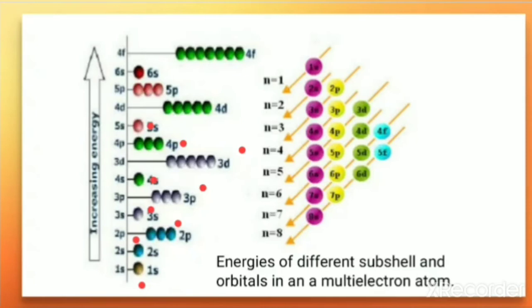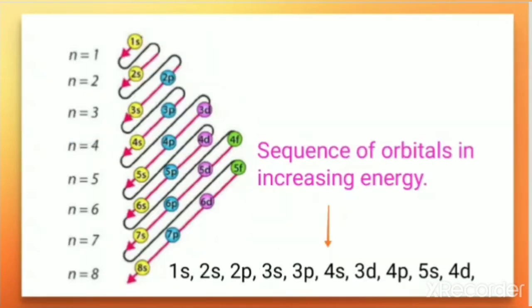In multi-electron atoms, energies depend upon both the values of n and l, which causes the variation seen in the diagram. When we arrange the orbitals in increasing order of energy we get: 1s, 2s, 2p, 3s, 3p, 4s, 3d, 4p, 5s, 4d, and so on.